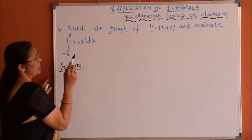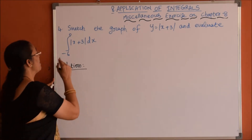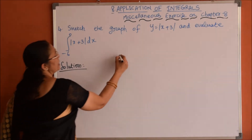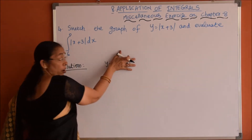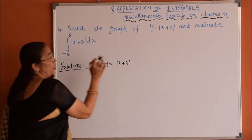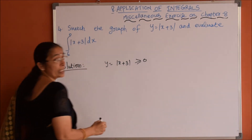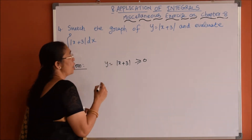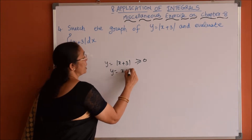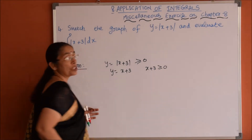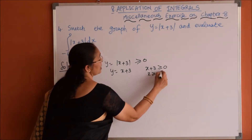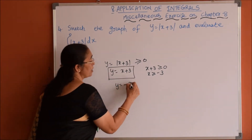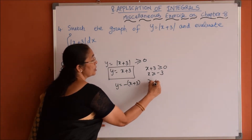Fourth problem: sketch the graph of y = modulus of (x+3) and evaluate the integration from minus 6 to 0 of mod(x+3) dx. Since modulus value is always positive, y is always greater than or equal to 0, so the graph is always above the x-axis. By definition of the modulus function: y = (x+3) for x greater than or equal to minus 3, and y = minus(x+3) for all x values less than or equal to minus 3.